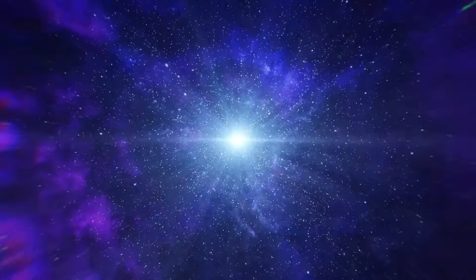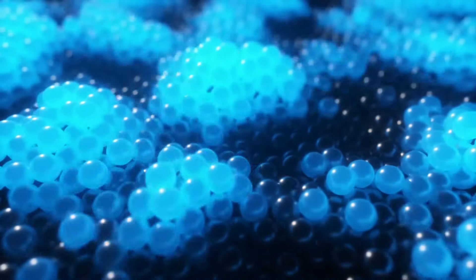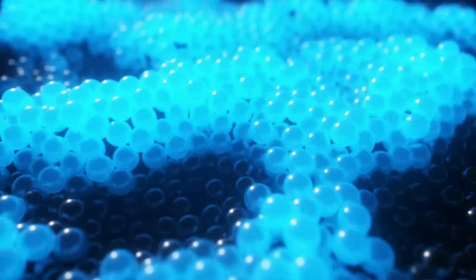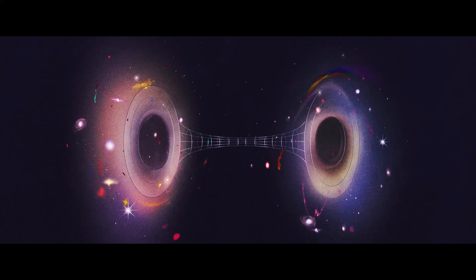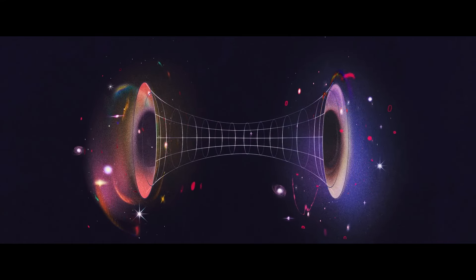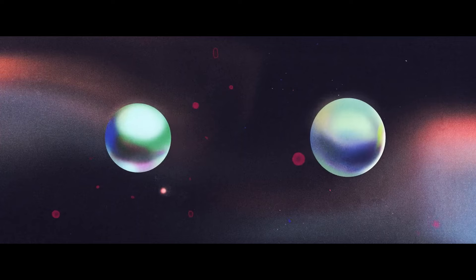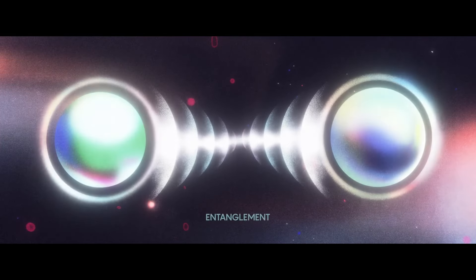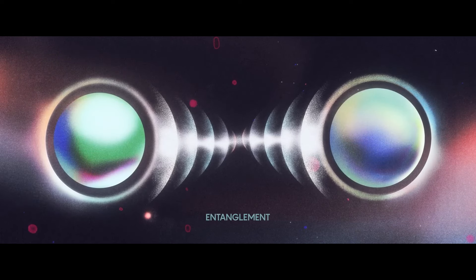So, what existed before the Big Bang? According to loop quantum cosmology, it might have been another phase of the universe, the contraction phase preceding the quantum jump. In loop quantum cosmology, the concept of a quantum bridge is intriguing. This bridge signifies a transitional stage linking our universe to its predecessor. Instead of a singularity, the universe undergoes a quantum leap, transitioning from contraction to expansion.